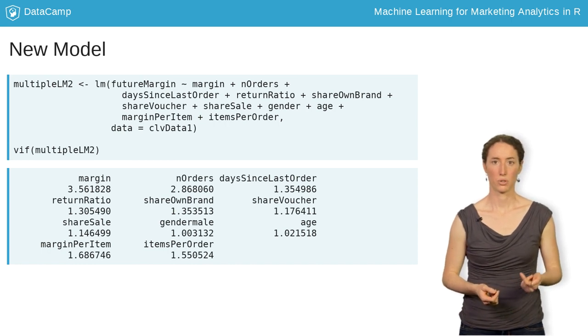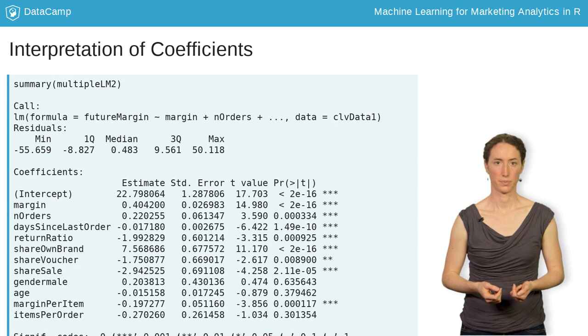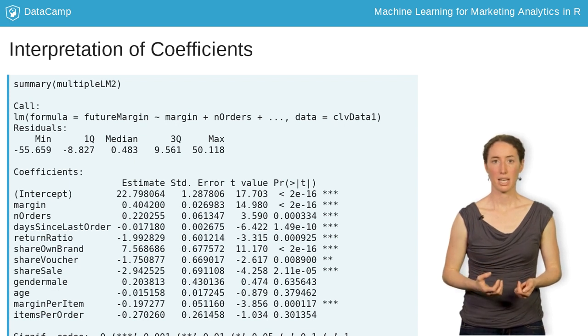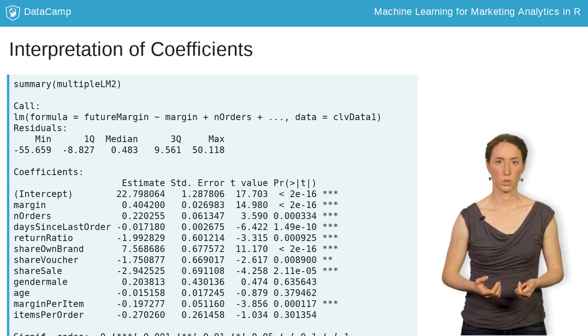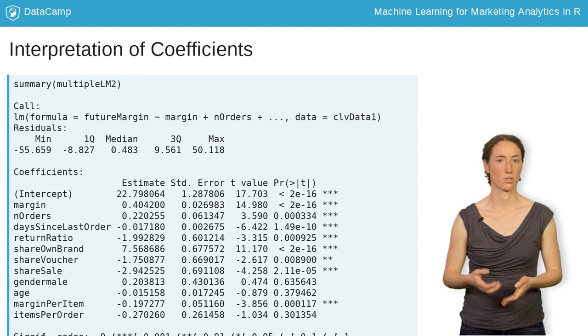Finally, we are ready to interpret the model output. The intercept gives the expected margin in year 2 when all independent variables are set to 0.